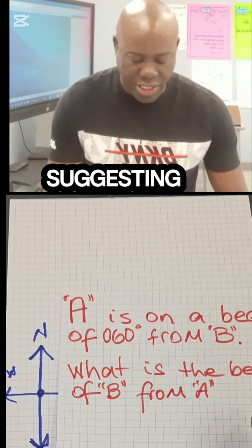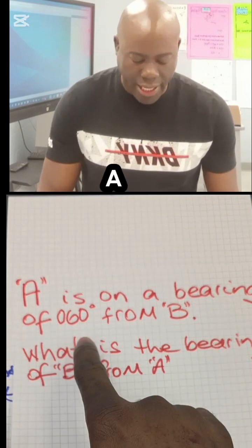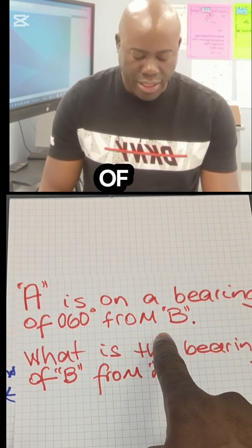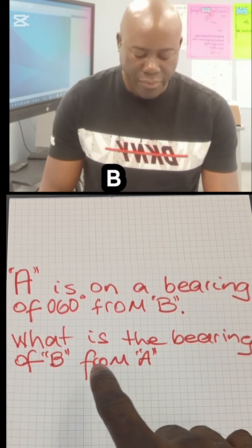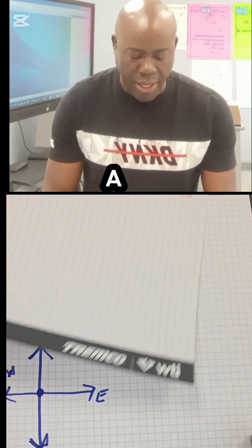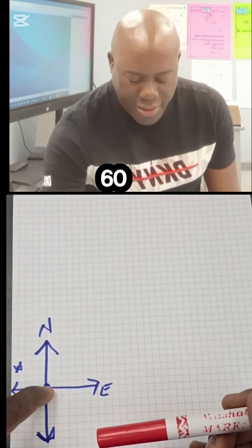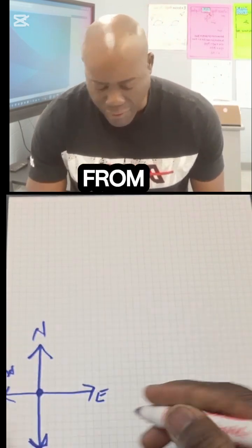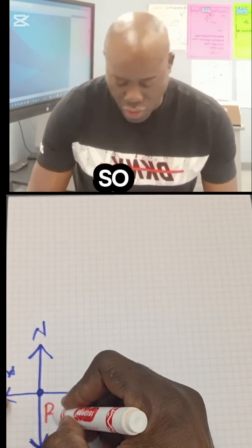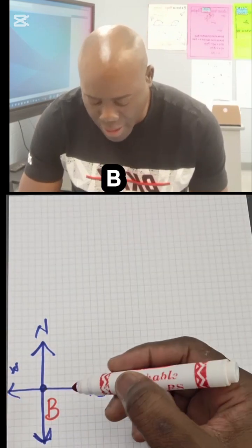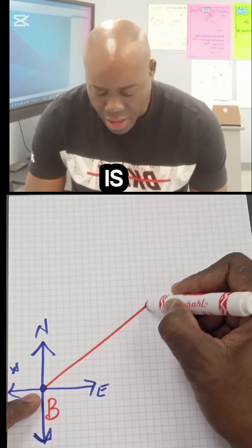Let's put the question aside. We are suggesting that A is on a bearing of 60 degrees from B, and then we want to know the bearing of B from A. But let us put this on first: A is on a bearing of 60 degrees from B. That's your starting point, so we're starting from B.